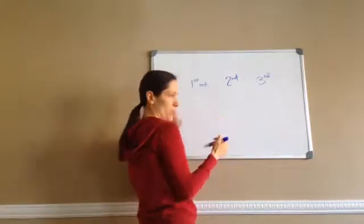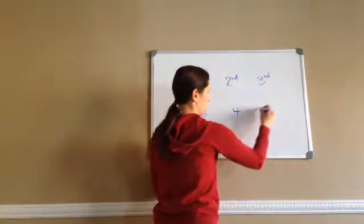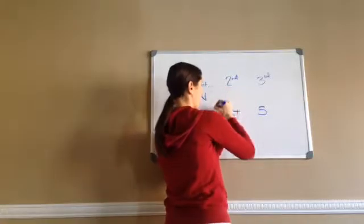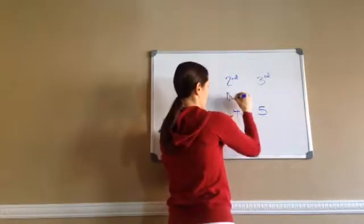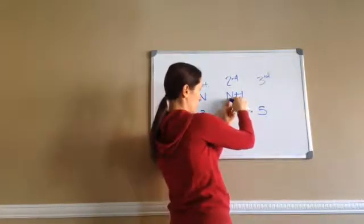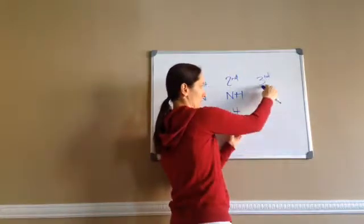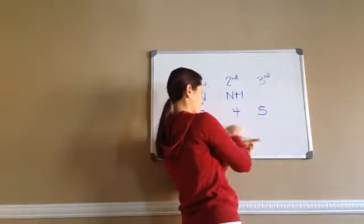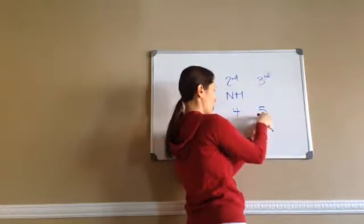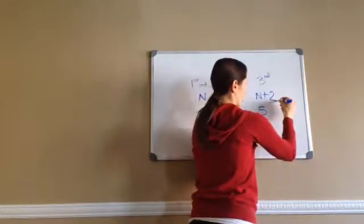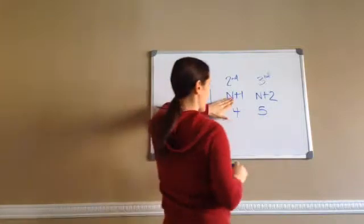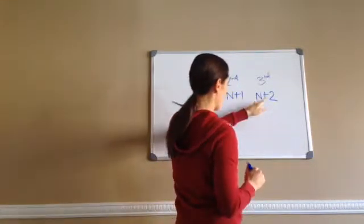Let's say I did 3, 4, and 5. If n was my 3, then what would 4 be? 3 plus 1. So n plus 1 gives me 4, because if n is 3, then n plus 1 would be 4. Now let's look at our third consecutive integer — first, second, third. Then what does my third one have to be? n plus 2. So this is my first integer, this is my second integer, and this is my third integer.